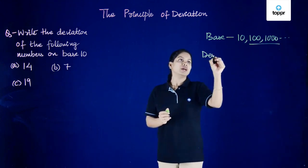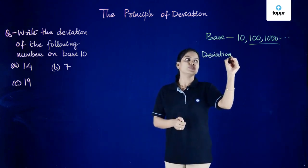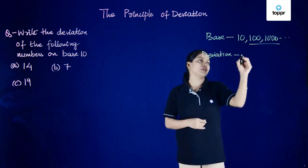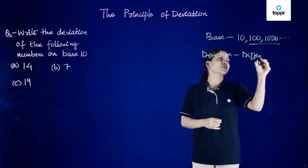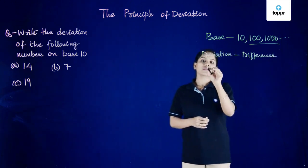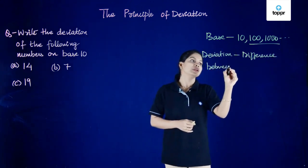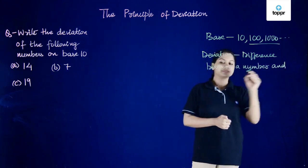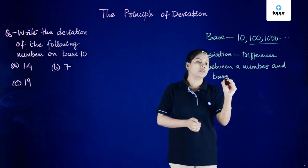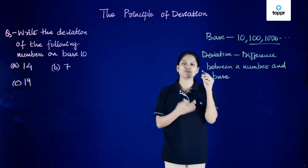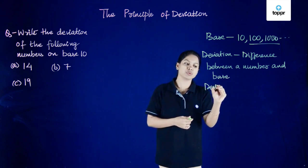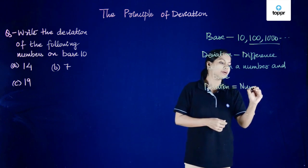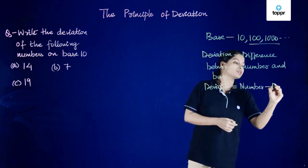Now deviation of a number is simply the difference between a number and its base. That is for us it is only 10, the difference between a number and base. Since it is the difference, we can write it as a formula: deviation is equal to number minus the base.